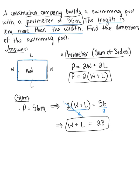The other thing we're given is that the length is 10 meters more than the width. So L equals 10 more than the width. The word 'more' means we use addition, so L = 10 + W.